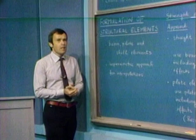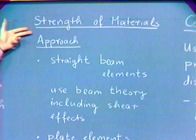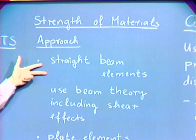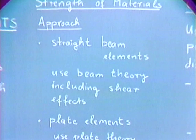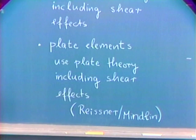There are two approaches in the formulation that we can follow. The first one is a strength of materials approach. If we look at a straight beam element, we use a beam theory including shear effects. If we look at a plate element, we use a plate theory including shear effects also. The names associated with these theories are the names of Reissner and Mindlin.